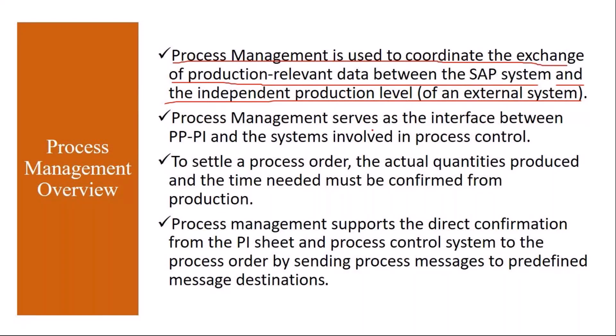What process management does is take the production-relevant data from the process order and send it to the process control system. Process management serves as the interface between PP-PI and the systems involved in process control. You send data from the process order to the process control system, and also receive data back from the process control system.